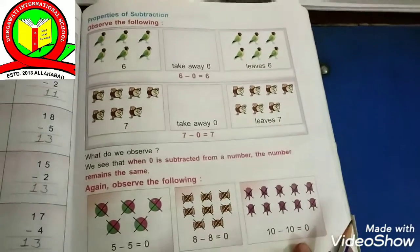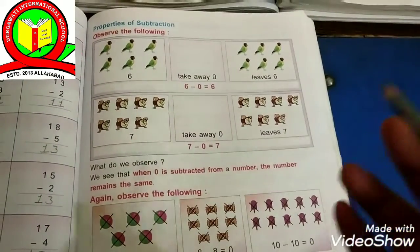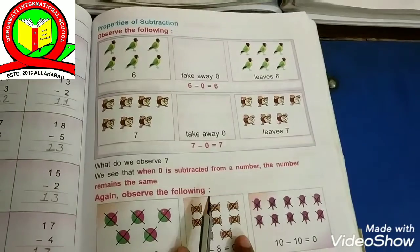So what do we observe? We see that when 0 is subtracted from a number, the number remains the same.